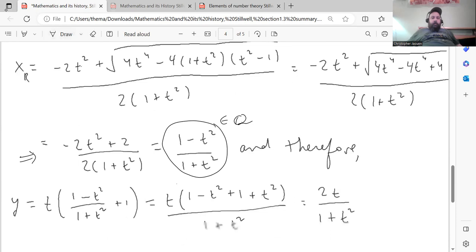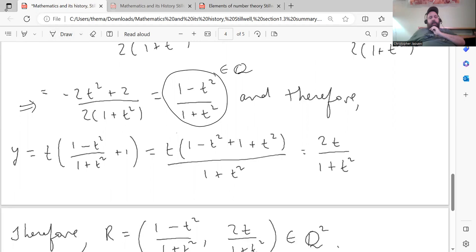Okay, and then we can plug this into the equation of the line for x, and that'll let us solve for y, rather. y is equal to t times 1 minus t squared over 1 plus t squared plus 1. When you simplify that, you get 2t over 1 plus t squared. Okay, again, notice that that's rational because t is rational.